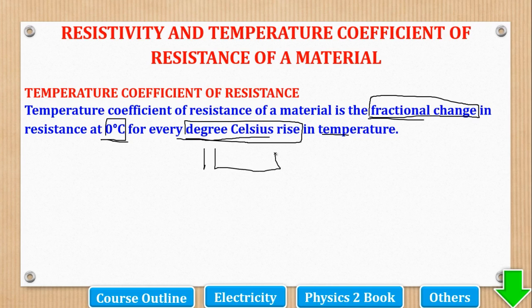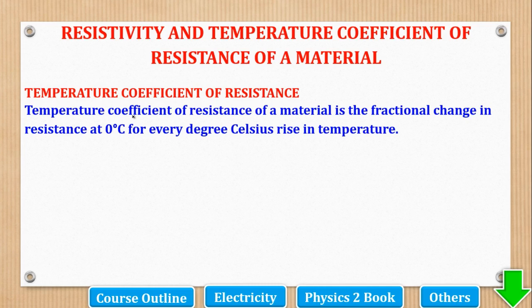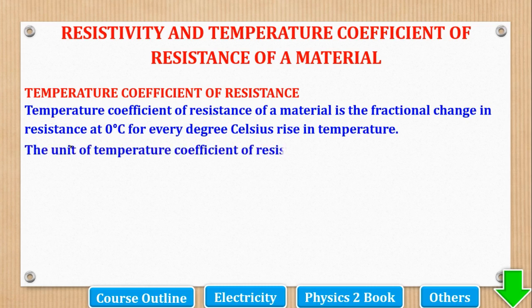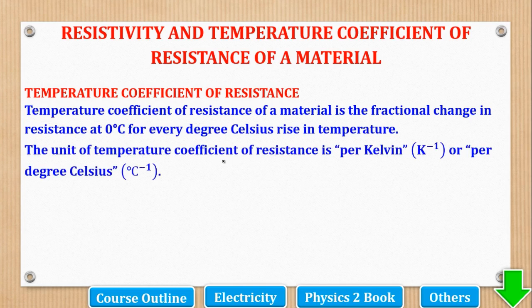For a conductor, temperature affects resistance. There are three things which affect resistance: one is the length of the conductor, two is the cross-section area, and the third is temperature. When temperature changes, resistance changes. The temperature coefficient of resistance enables us to get the resistance of a conducting wire at any given temperature, provided you know the resistance at 0 degrees Celsius and the temperature coefficient of that material.